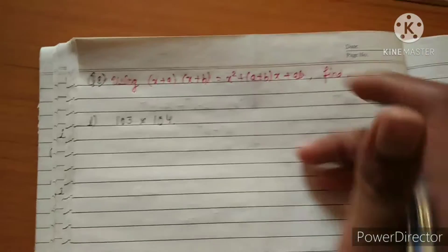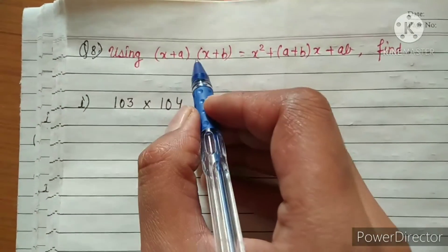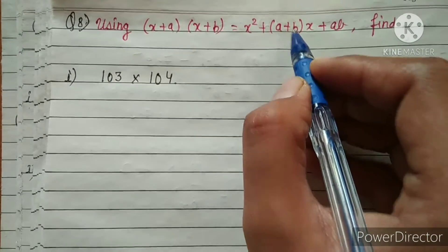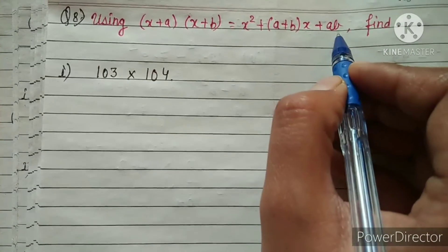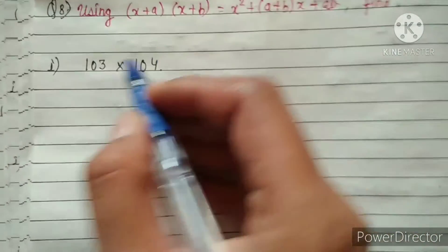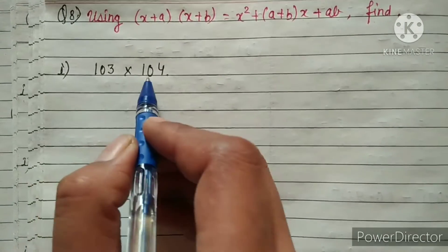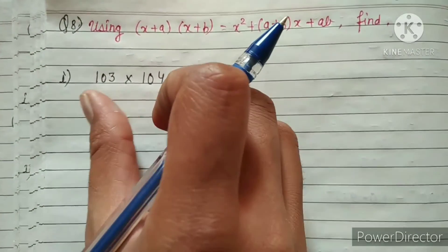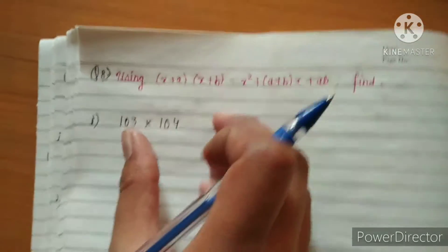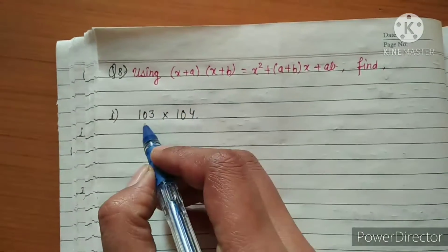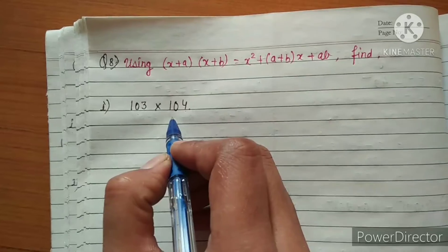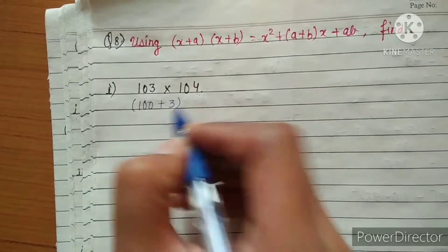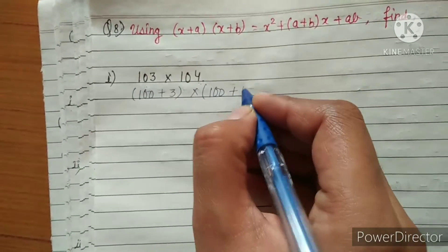Question number 8 uses the identity: x plus a multiplied by x plus b equals x squared plus a plus b multiplied by x, plus ab. The first question is 103 multiplied by 104. Since 103 and 104 are both nearest to 100, they can be written as 100 plus 3 multiplied by 100 plus 4.